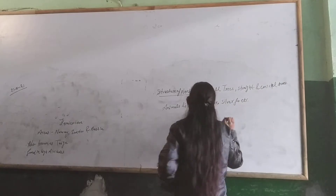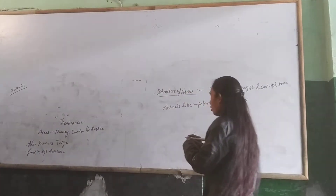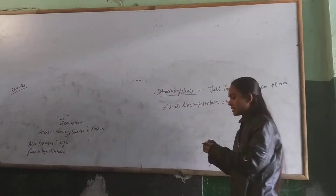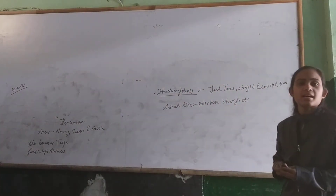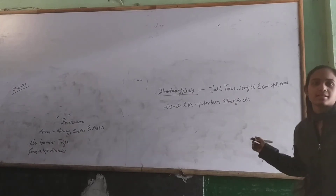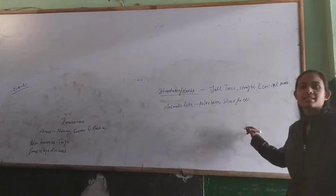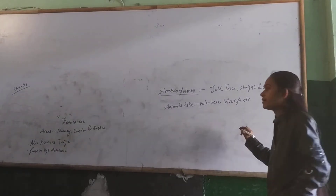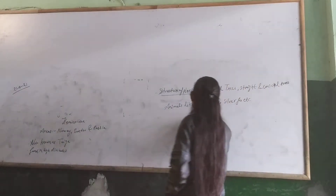So students, all six sides of the forest are completed. Now we will learn about the grasslings. This is your next heading — you will write grasslings.